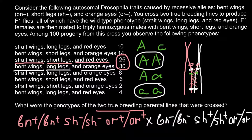F1 females were then mated to homozygous recessive males for all three traits, giving us the observed numbers. Because genes are on the same chromosome, they have a connection — depending on how close they are, crossing over frequencies differ, and genes located close together tend to be inherited together more frequently. I hope this was helpful and you'll be able to solve analogous problems on your exam. That's all for today — thank you for your attention. Please subscribe, give a thumbs up if you liked the video, and write your comments or questions.